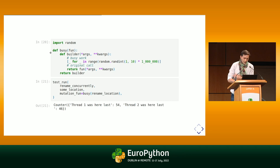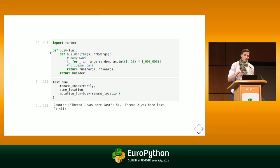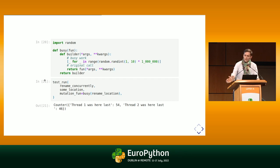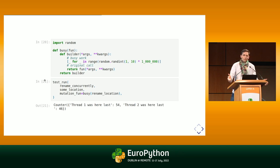Now if I run my test again, I can finally see two different values. I can see that sometimes thread one finishes first and sometimes thread two finishes first. That's better — here I can see that the race condition is real. If I call rename location twice concurrently, I don't know what value I end up with, which is obviously not a good place to be in.